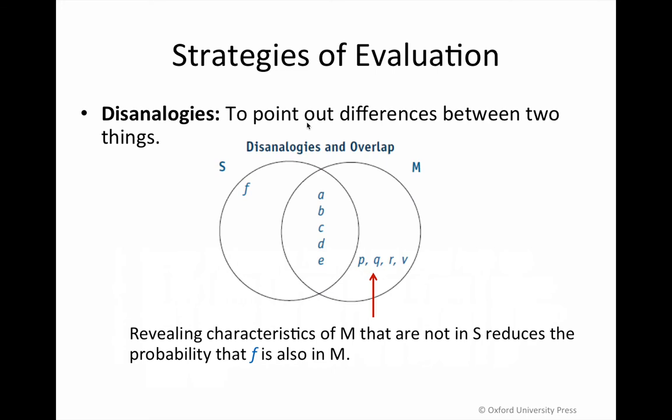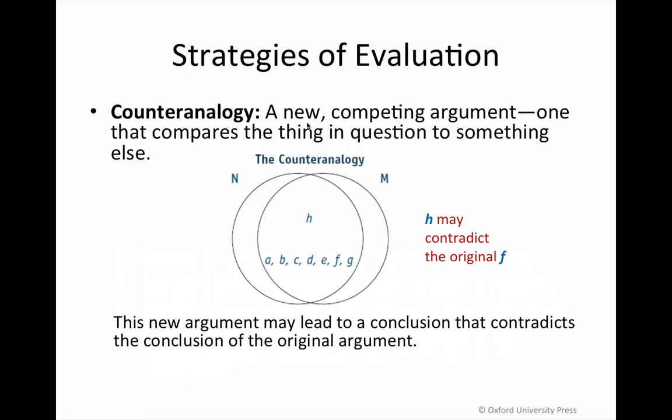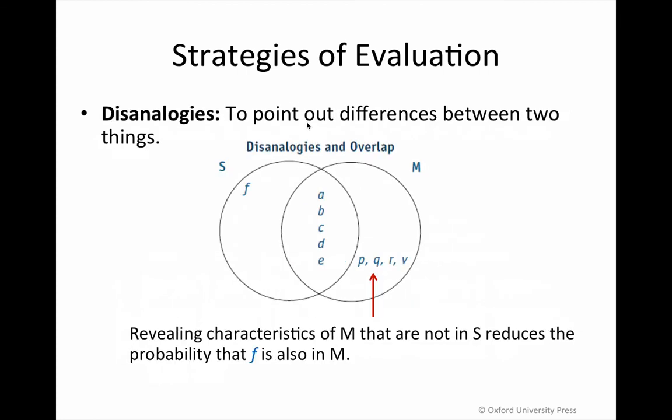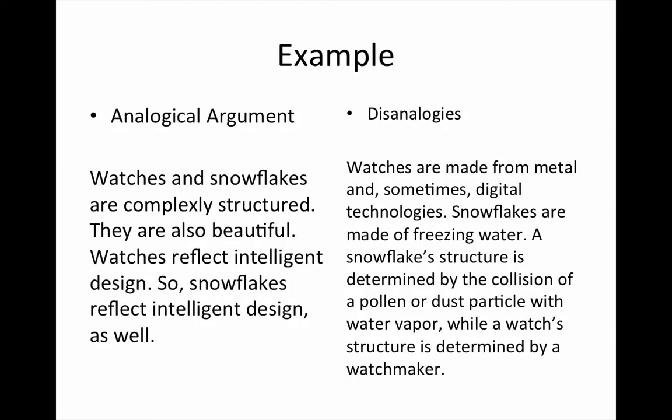Now let's look at how we can test the relative strength or weakness of a given argument by examining disanalogies and counter analogies. A disanalogy is a relevant or irrelevant dissimilarity between those things being compared. Relevant disanalogies are important; irrelevant dissimilarities are not. Let's look at an analogical argument involving watches and snowflakes and consider which disanalogies are relevant and which are irrelevant to the conclusion.